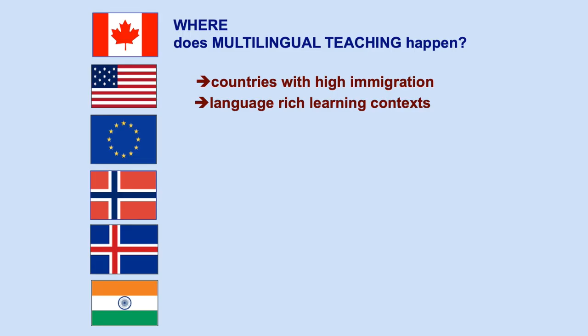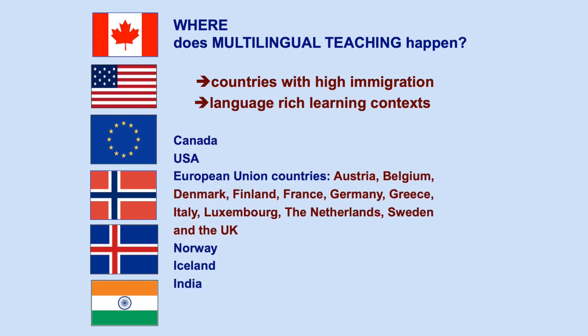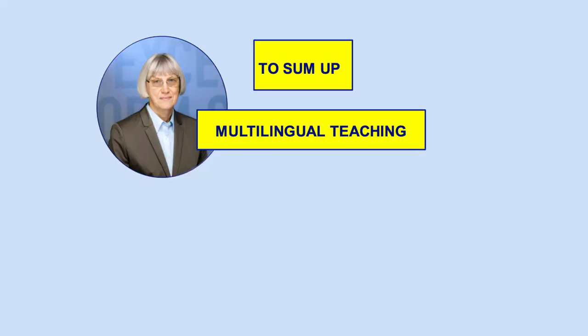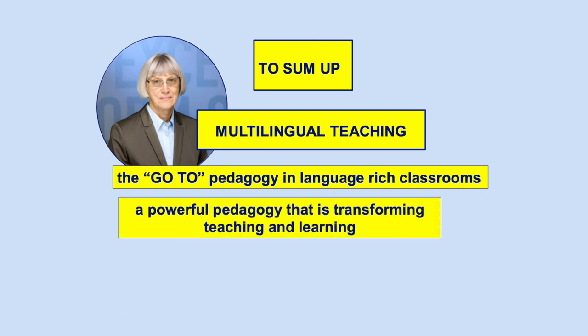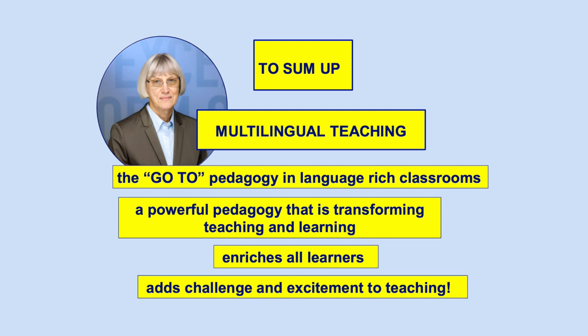Now we turn to our last question: where does multilingual teaching happen? Multilingual teaching happens in countries with high immigration — in language-rich child care centers, preschools, classrooms, and specialized programs such as music, art, sports, and language intervention. More and more teachers in these countries are responding to the linguistic diversity in their classrooms, retooling their instructional practice, and adopting multilingual teaching. Multilingual teaching is the go-to pedagogy in language-rich classrooms. It's a powerful pedagogy that is transforming teaching and learning, enriching all learners and adding challenge and excitement to teaching.